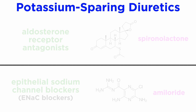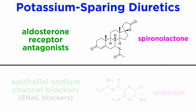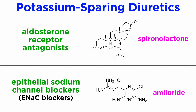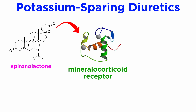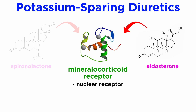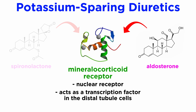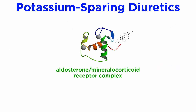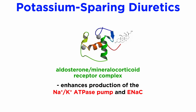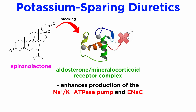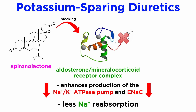Potassium-sparing diuretics can be divided into two subcategories. The first function as aldosterone receptor antagonists, such as spironolactone. Aldosterone antagonists block the mineralocorticoid receptor, which is a nuclear receptor that, in the absence of an aldosterone antagonist, binds to aldosterone and acts as a transcription factor in the nucleus of the distal tubule cells. The aldosterone-mineralocorticoid receptor complex enhances the protein production of Na+/K+ ATPase pump and ENaC. In the presence of aldosterone receptor antagonists, this transcription of ENaC and Na+/K+ ATPase pump is reduced, causing fewer transport proteins to be inserted into the membrane, leading to less sodium reabsorption out of the tubular fluid and therefore less water reabsorption.